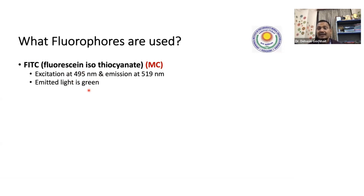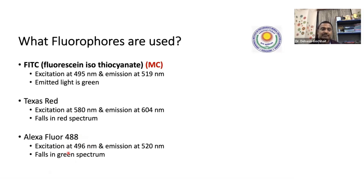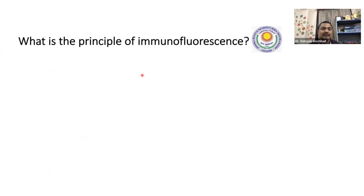What we capture is the emission spectra, and we see it as a color. If we use FITC, we see a green color — all those green fluorescence images I showed you were because of FITC. This is the most common fluorophore. Other fluorophores include Texas Red, which gives a red color instead of green, and Alexa Fluor, which has an excitation and emission spectrum close to FITC and also produces a green color. But for your purposes, just remember FITC is the most common.